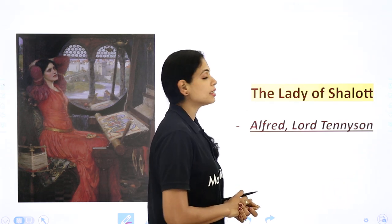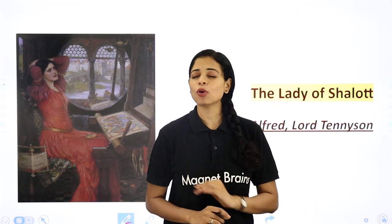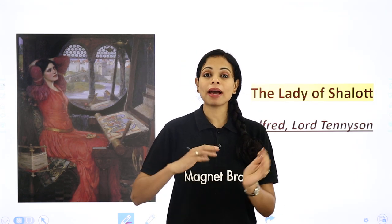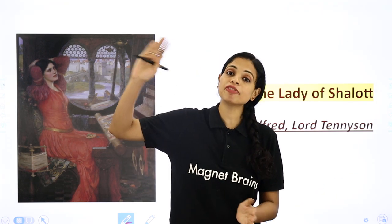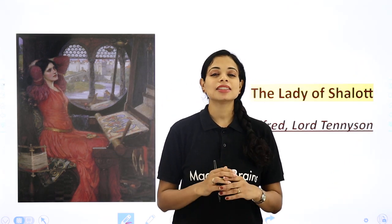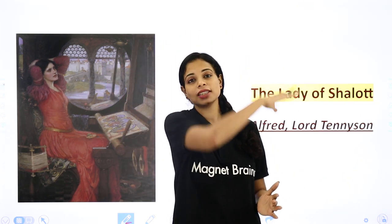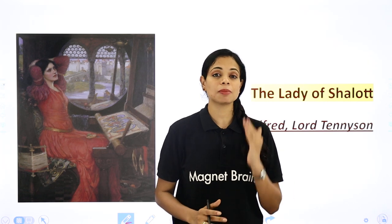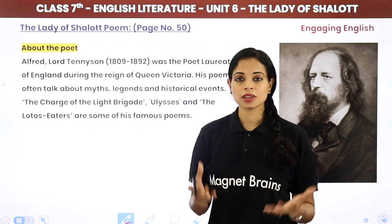The Lady of Shalott is written by Alfred Lord Tennyson. This poem is actually a very lengthy poem. But fortunately, in our book there is a short version — only part 1 and part 2, and part 3 and part 4. So it is a really long poem. Many students have found it confusing, so I am going to help you with a line by line explanation, then a summary, and then we will proceed towards the question answers. First let's understand our poet.